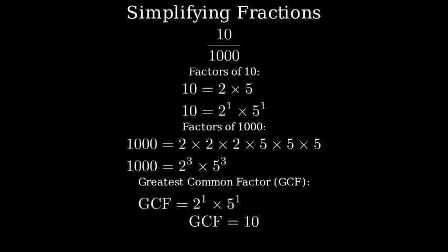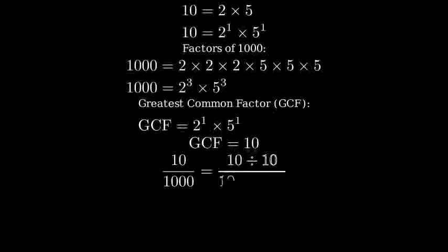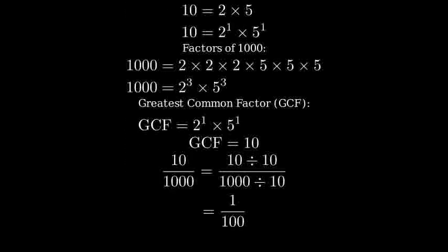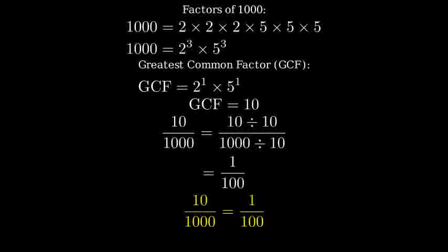Now we can simplify our fraction by dividing both the numerator and denominator by ten. Ten divided by ten equals one, and one thousand divided by ten equals one hundred. So our simplified fraction is one over one hundred.